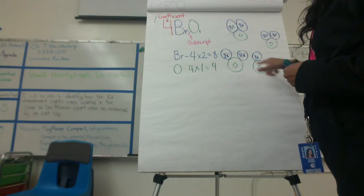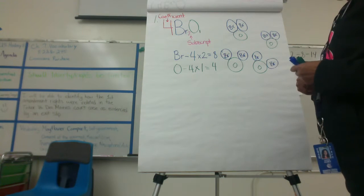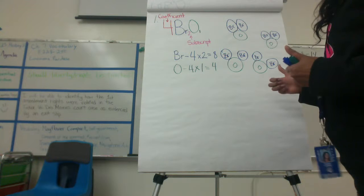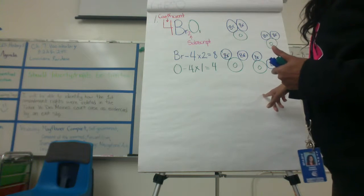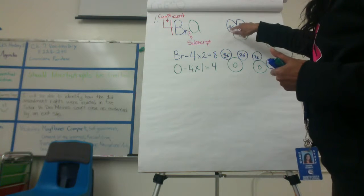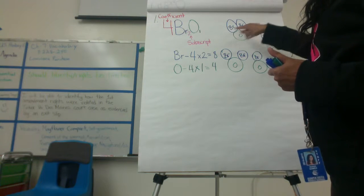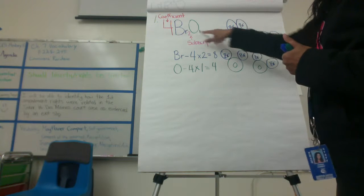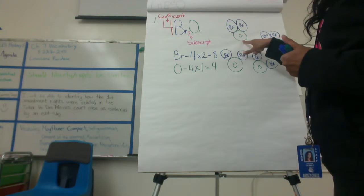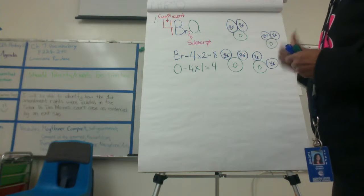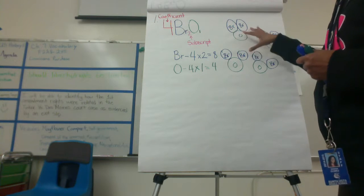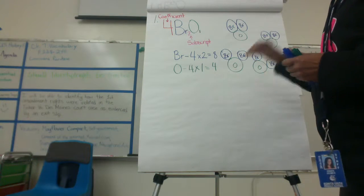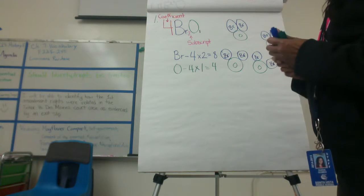Do I have four oxygens? One, two, three, four — I do. So my answer is correct. I have two bromines for each oxygen, and one oxygen per compound. That means I did my answer correctly.